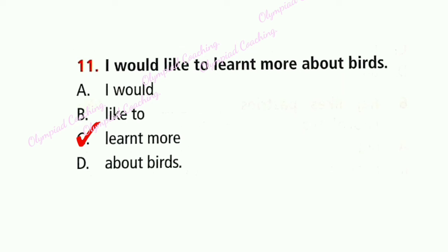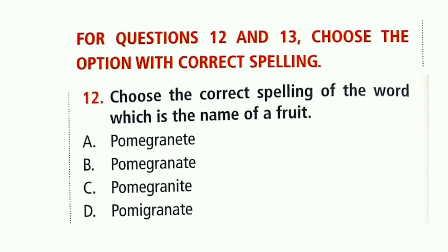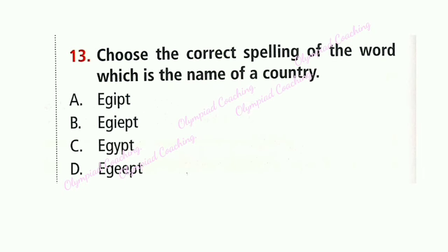We use 'to' plus root verb. For questions 12 and 13, choose the option with correct spelling. Question 12: Choose the correct spelling of the word which is the name of a fruit. Option B is correct: Pomegranate — P-O-M-E-G-R-A-N-A-T-E. Question 13: Choose the correct spelling of the word which is the name of a country. Option C is correct: Egypt — E-G-Y-P-T.